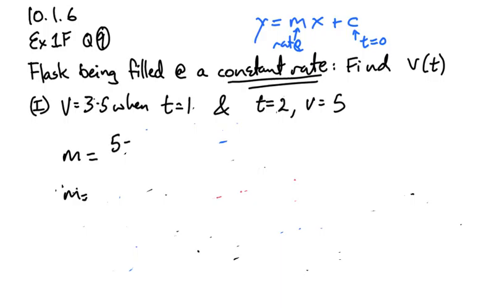Difference in volume, 5 minus 3.5. Over 2, take 1. The gradient is 1.5 litres per minute. Or if you prefer as I would, I'd write that as 3 over 2. But 1.5 is fine. It doesn't matter. What would my volume look like? Well, my equation in terms of t is going to be 3 over 2 times t plus c. How do we find out that initial volume? I need to sub in a point we know.